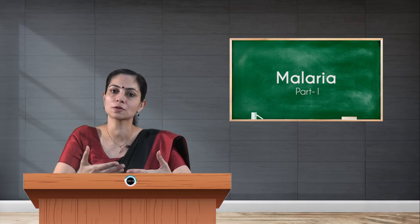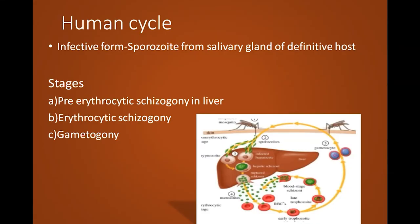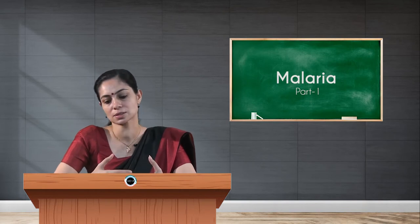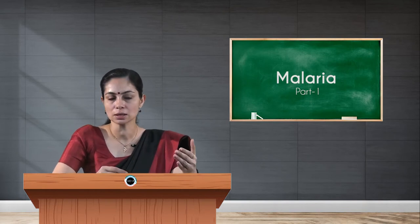In the human body, the parasite undergoes three different stages: pre-erythrocytic schizogony, erythrocytic schizogony, and gametogony. Pre-erythrocytic schizogony happens in the liver, before the parasite enters into RBCs or erythrocytes. We'll see each stage one by one.